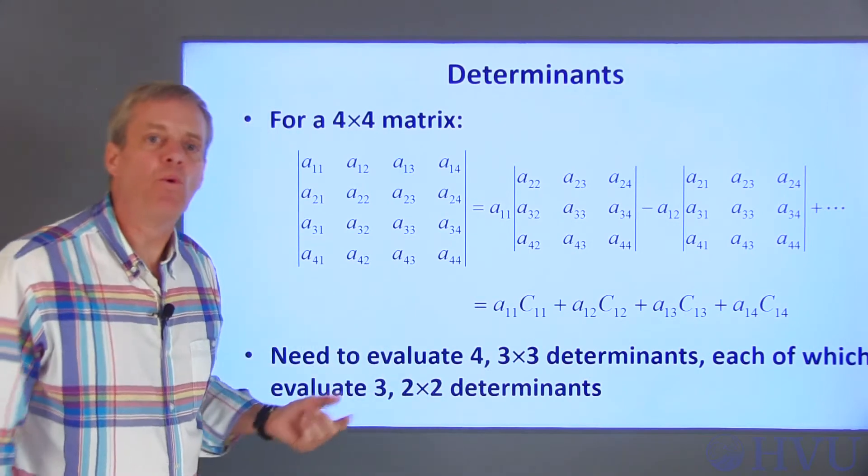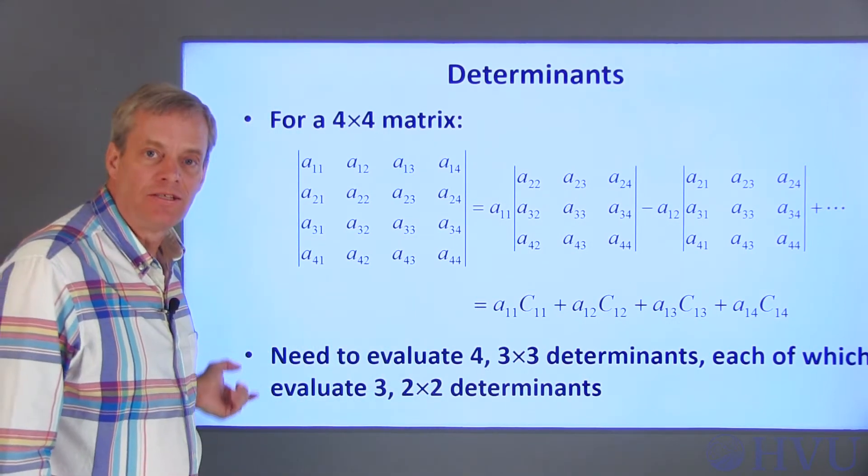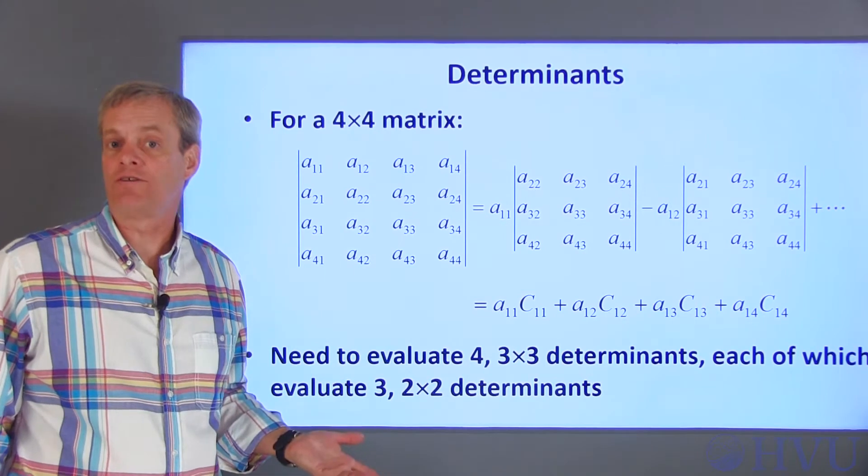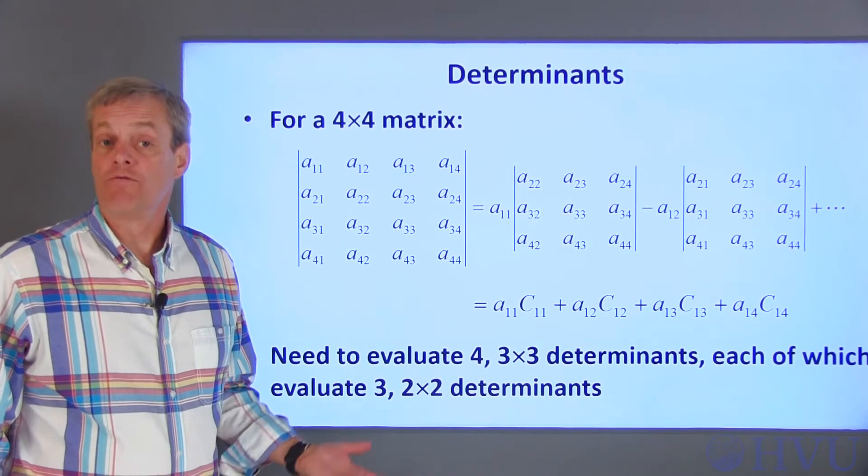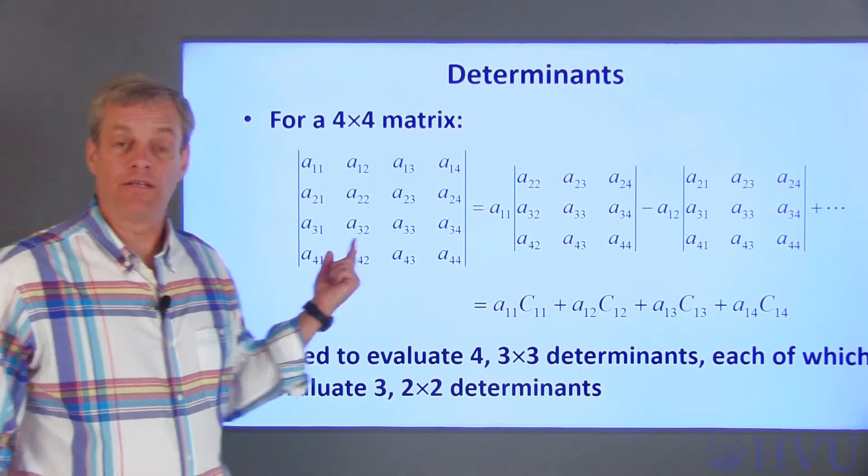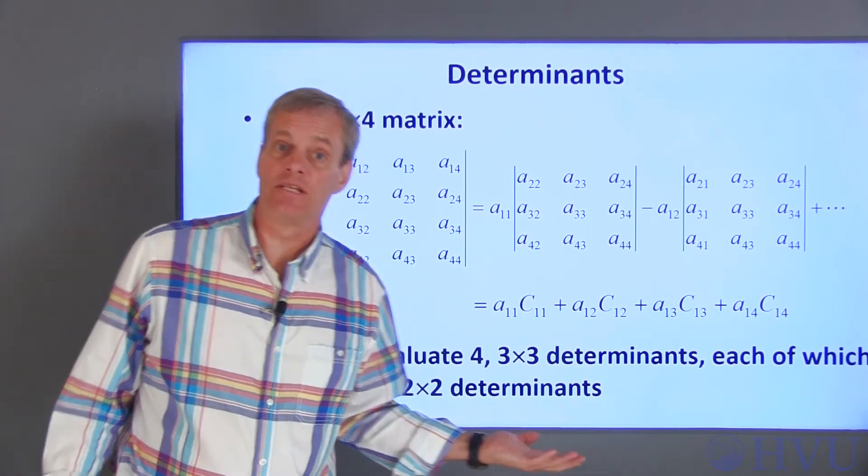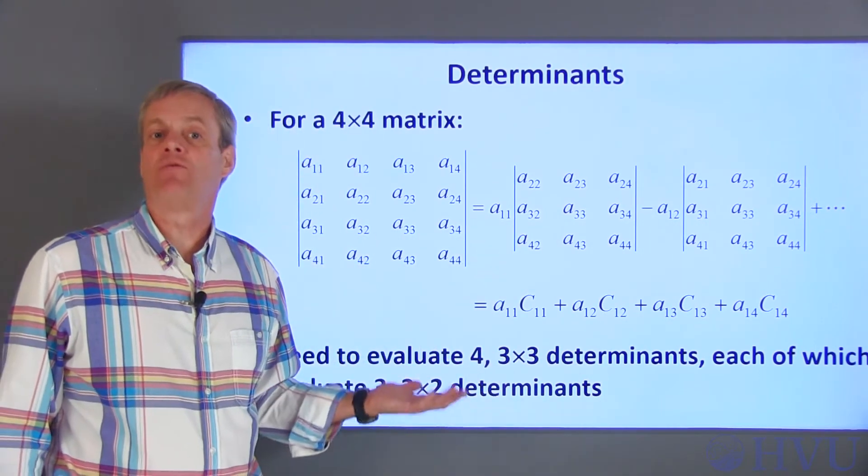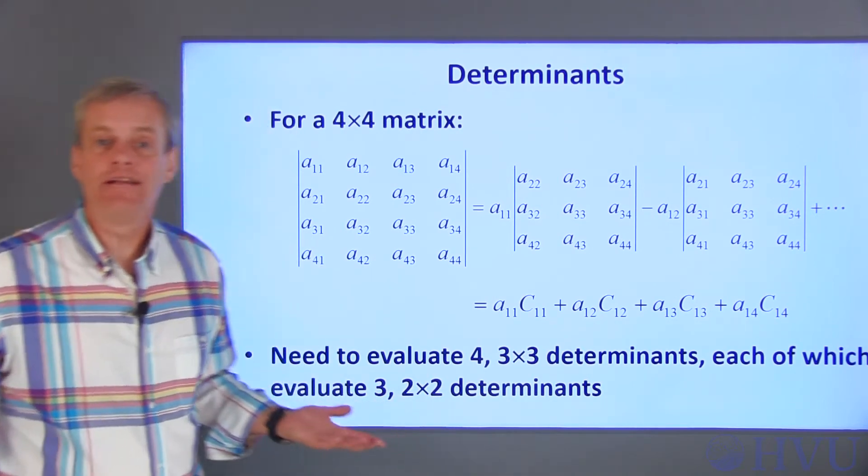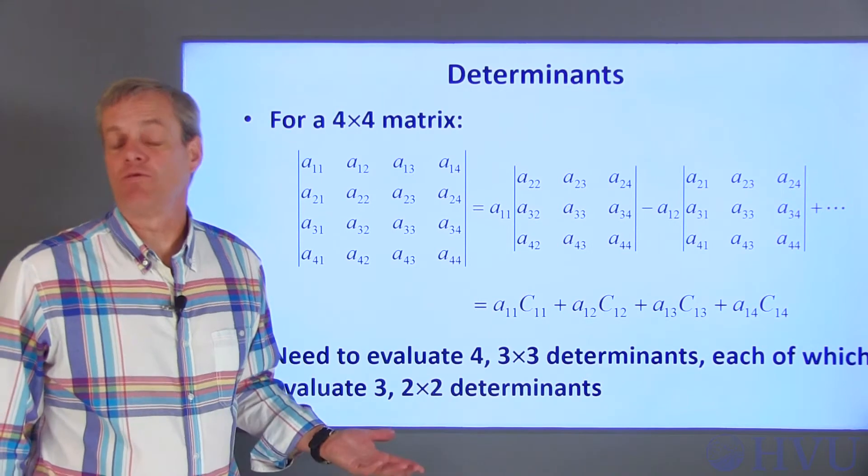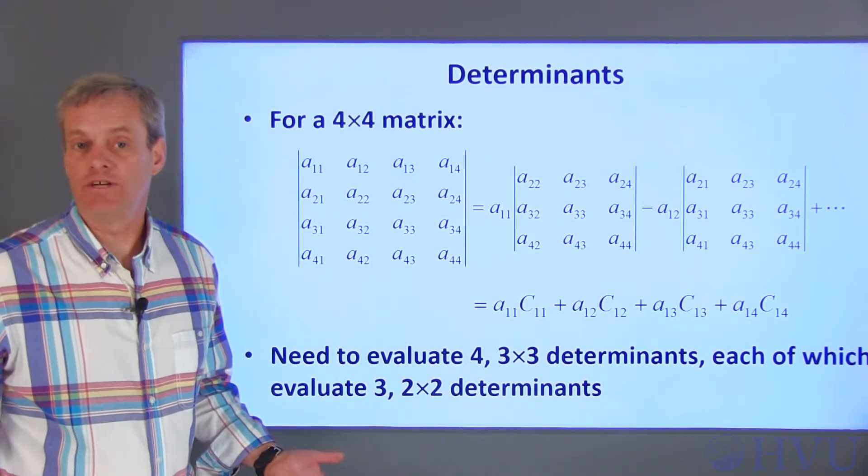The important point here is that the number of calculations required to calculate determinants and cofactors increases drastically as the matrices get larger. For a 4x4 matrix, you calculate 4 3x3 determinants, and each of those determinants requires you to calculate 3 2x2 determinants. Calculating the determinant of large matrices can require a huge number of operations and is really inefficient.